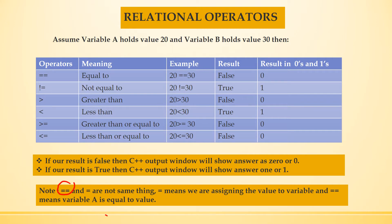One more important thing: double equal to and single equal to are not the same thing. When we use single equal to, that means we are assigning the value to that particular variable. When we use double equal to, that means we are checking whether that particular variable is equal to that value — here we are not assigning.